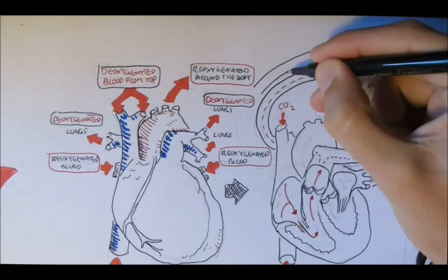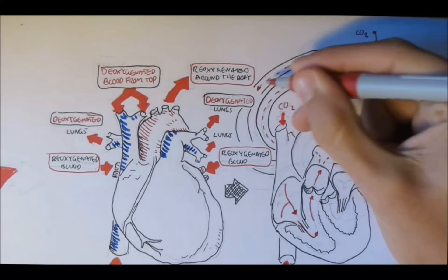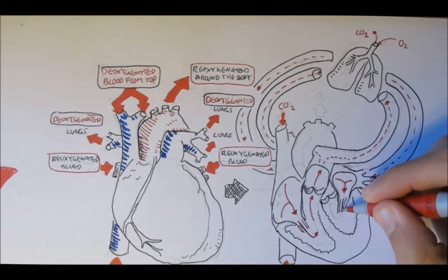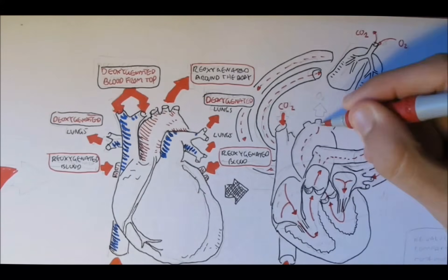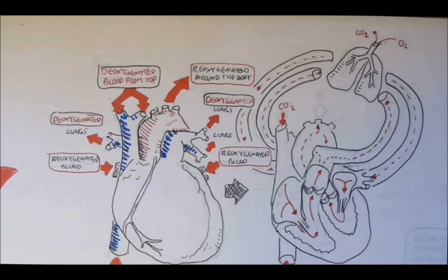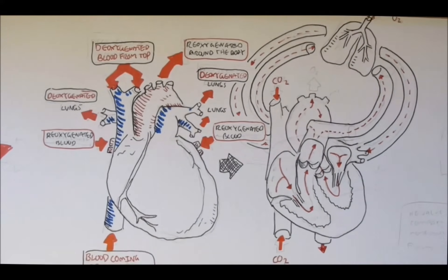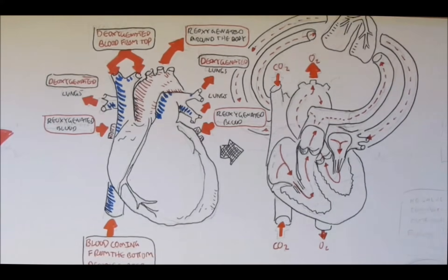This re-oxygenated blood supply will return back to the heart from the left side. It will come through this chamber, go down this chamber, and be pumped again for the second time around the whole body through the aorta — oxygenated blood pumped out of the heart through the aorta to supply the whole body.